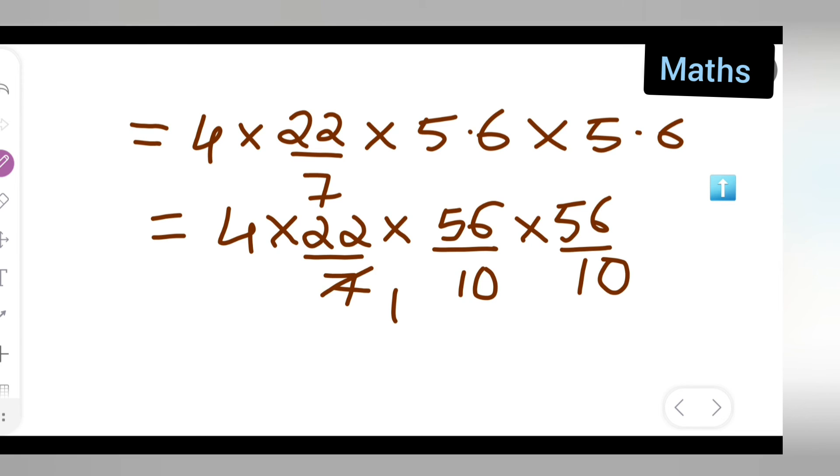Your next it will be 7 ones are 7 eights are right? Next what you can do is this will go in the table of. Now what you can do is just multiply this. 4 multiplied by 22 will give you 88 right? 4 2s are 8 you will get. So 88 multiplied by 8 multiplied by 56 right?